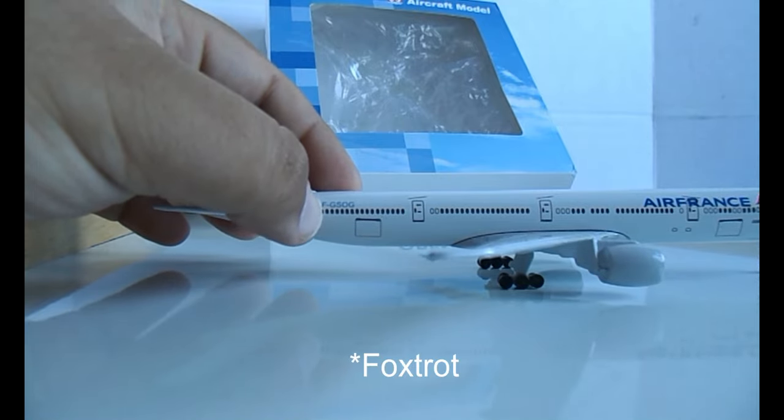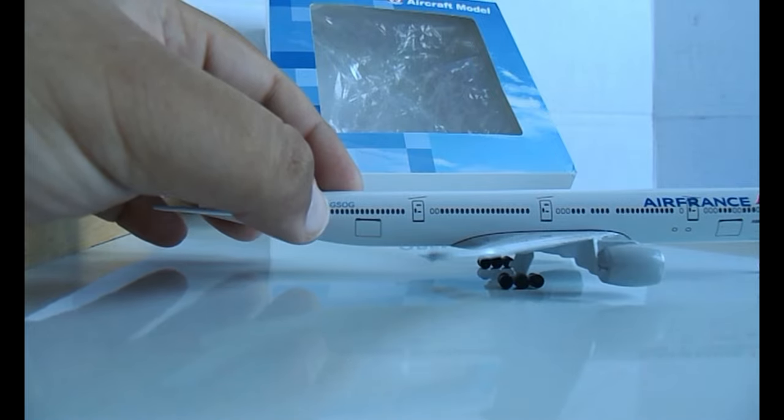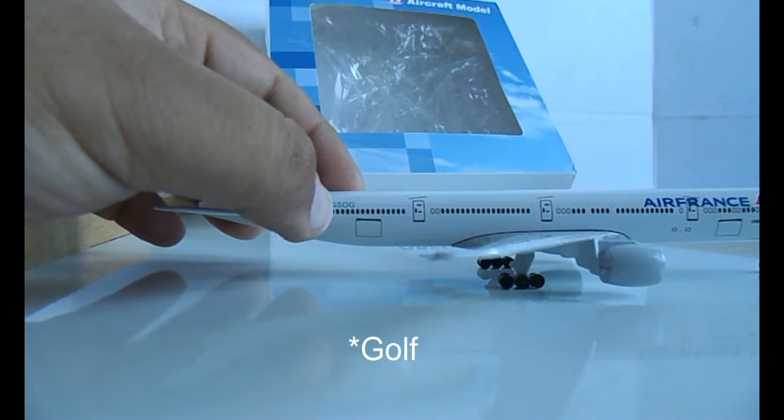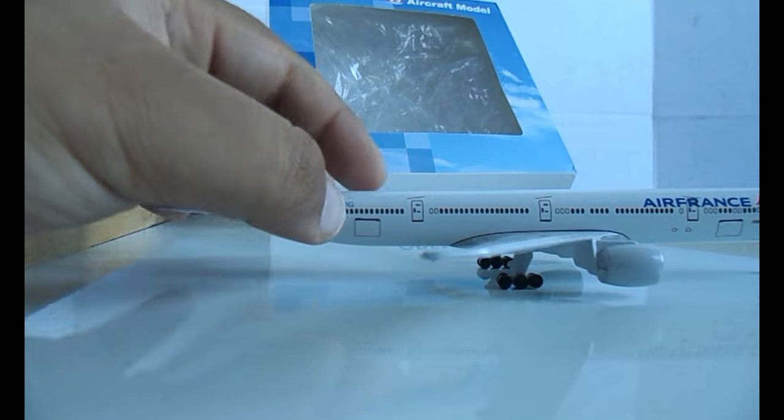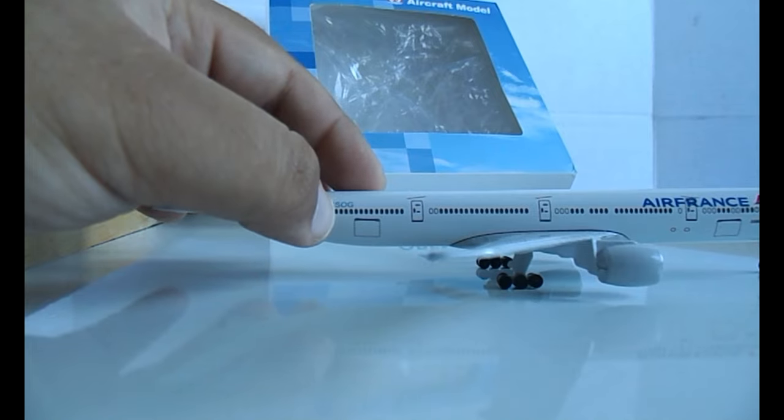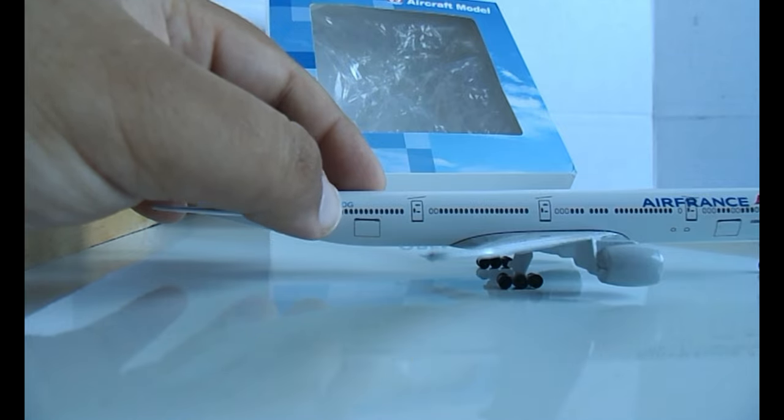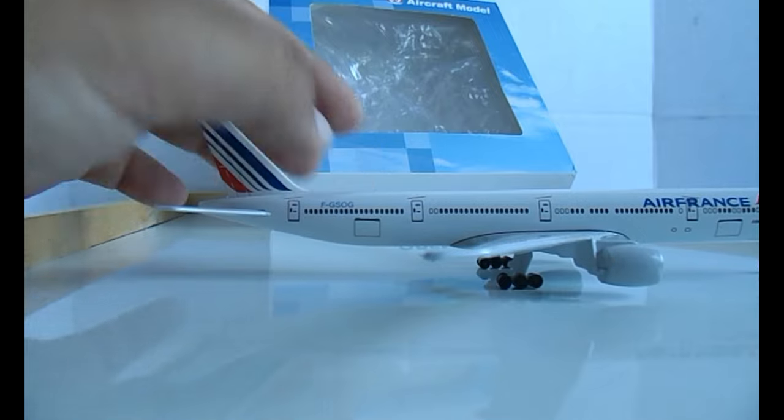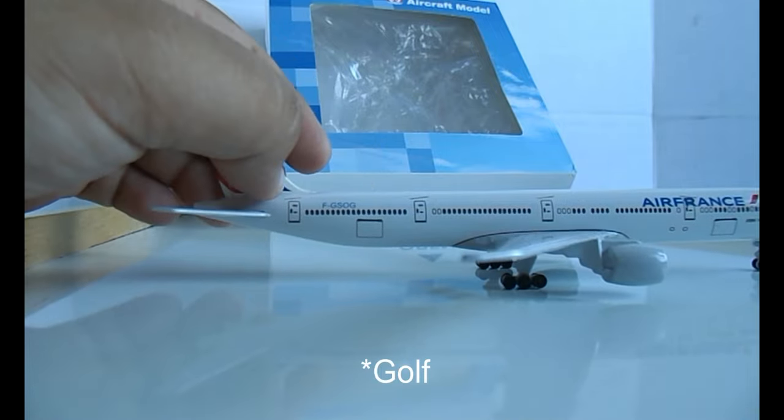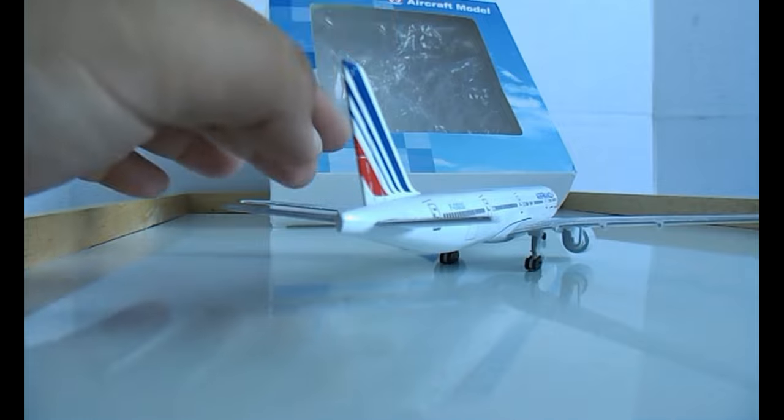It's F-GSOG. Let's call it F as in Foxtrot, G as in George, S as Sierra, O as Oscar, and G as in George. And surprisingly, all the flaps and slats are very detailed.